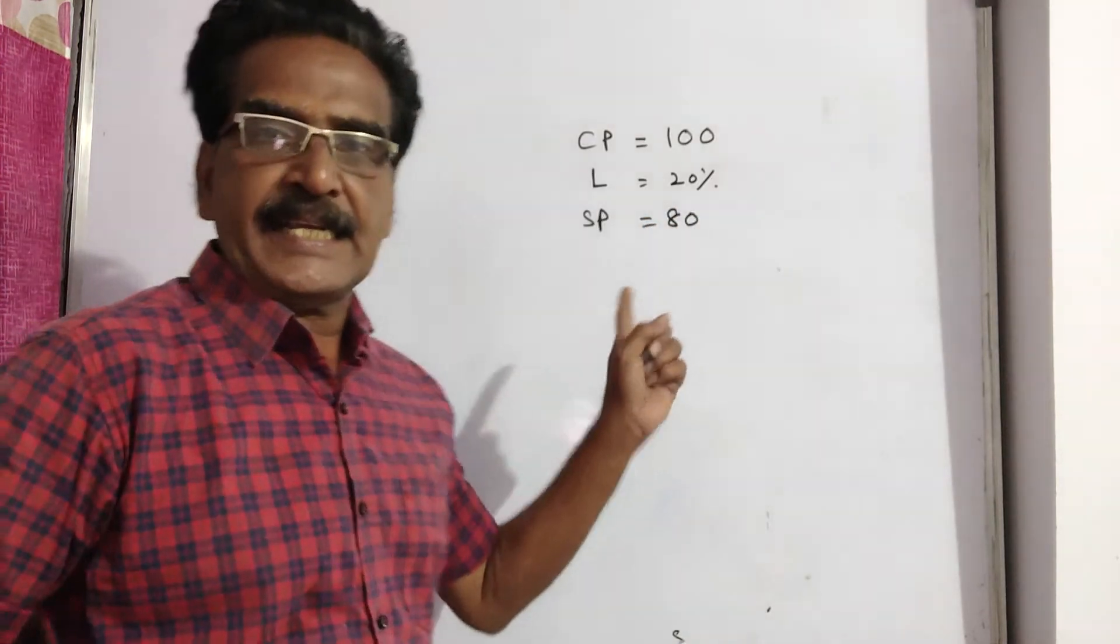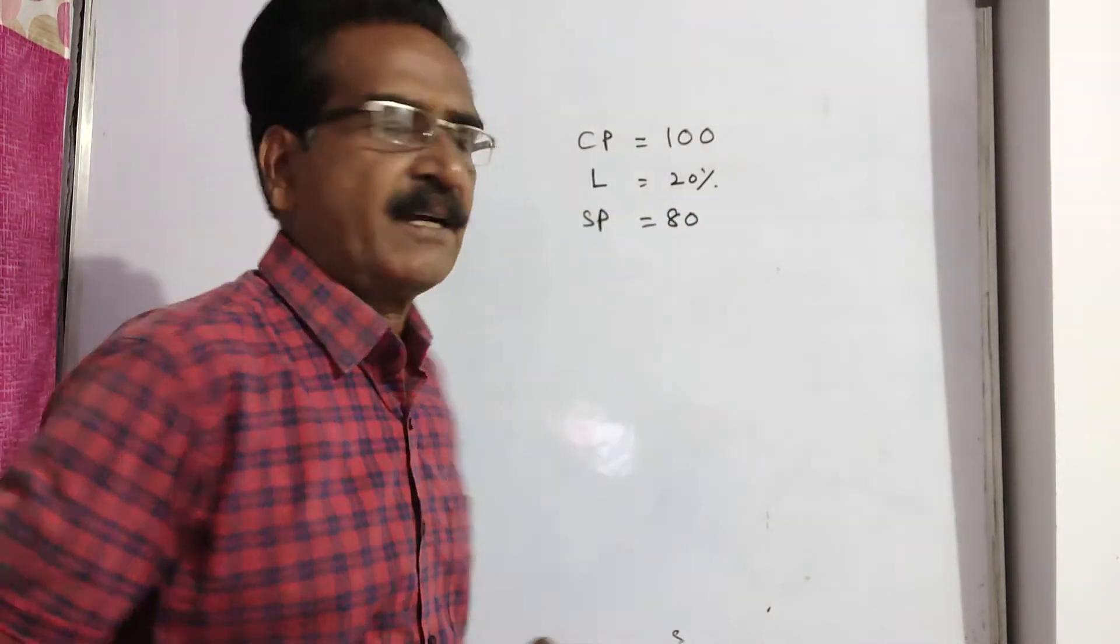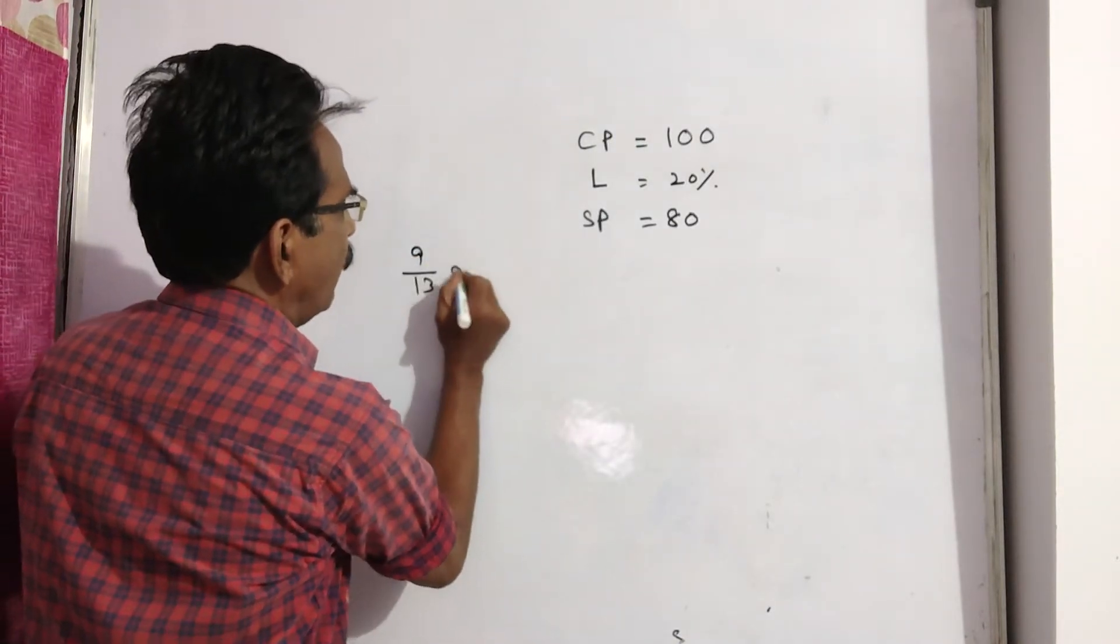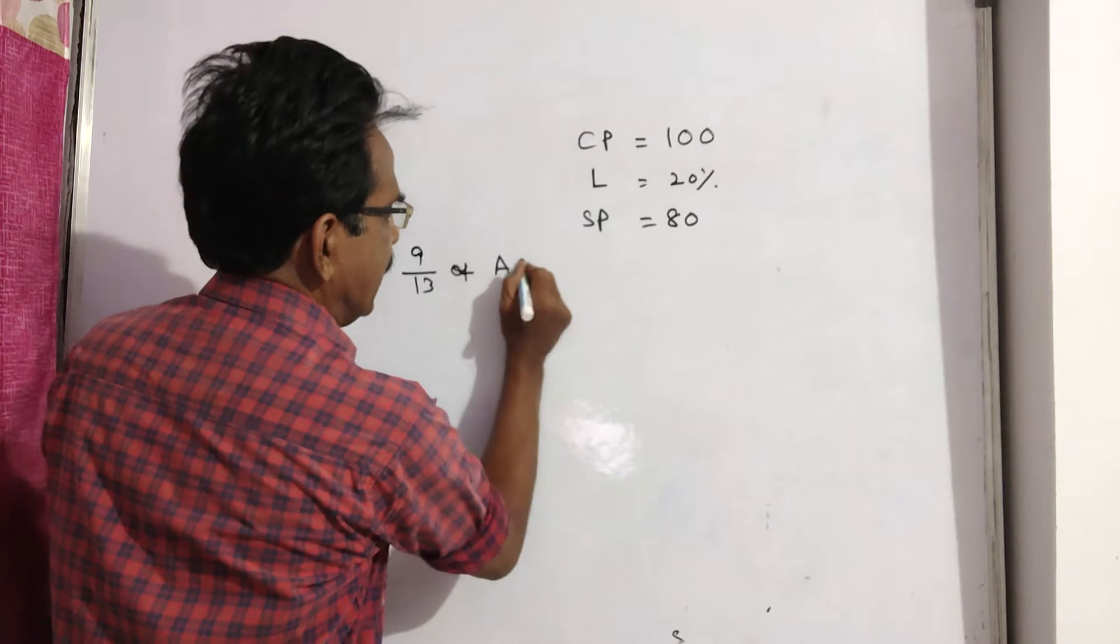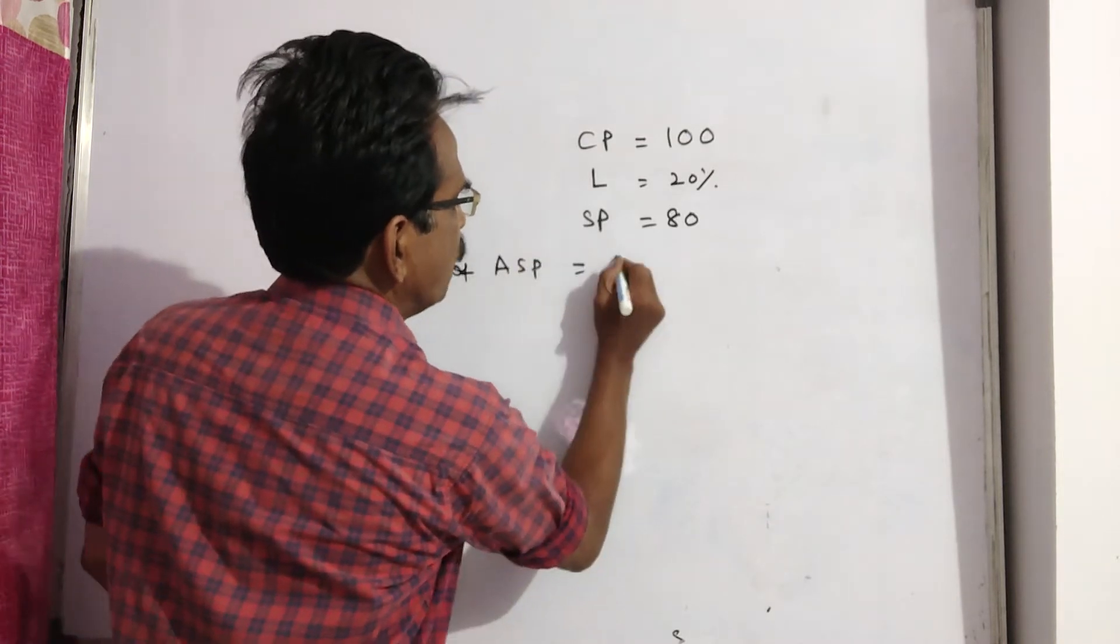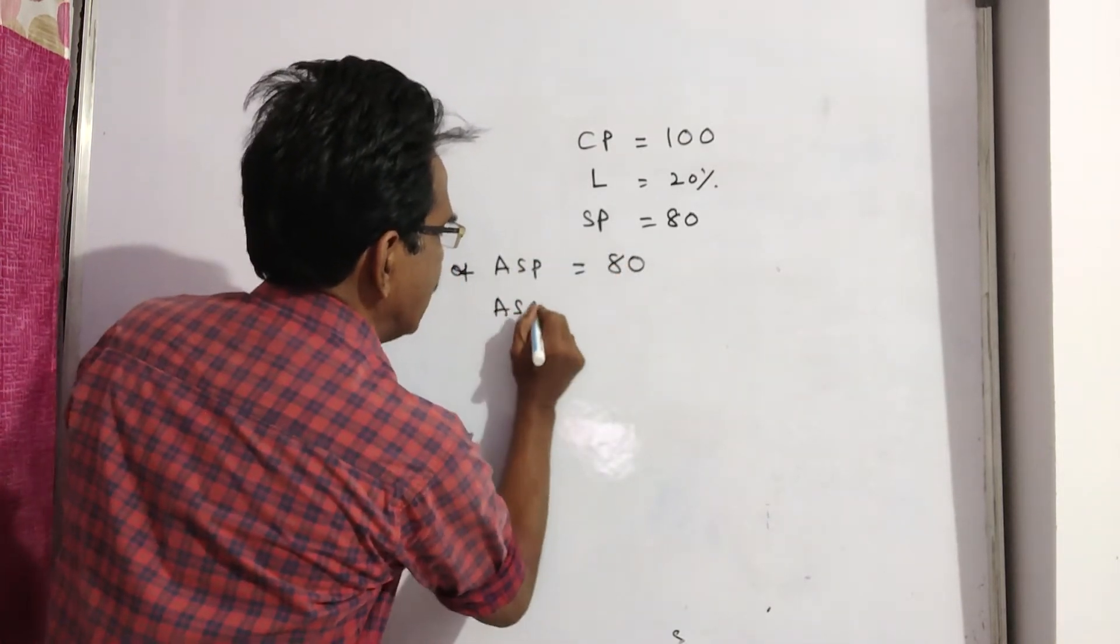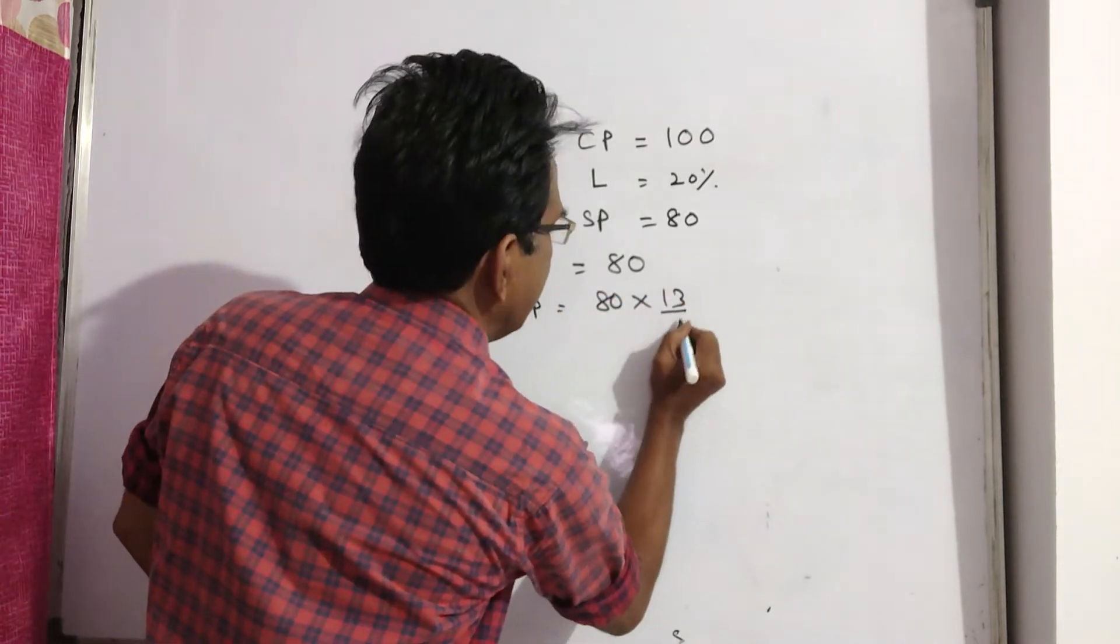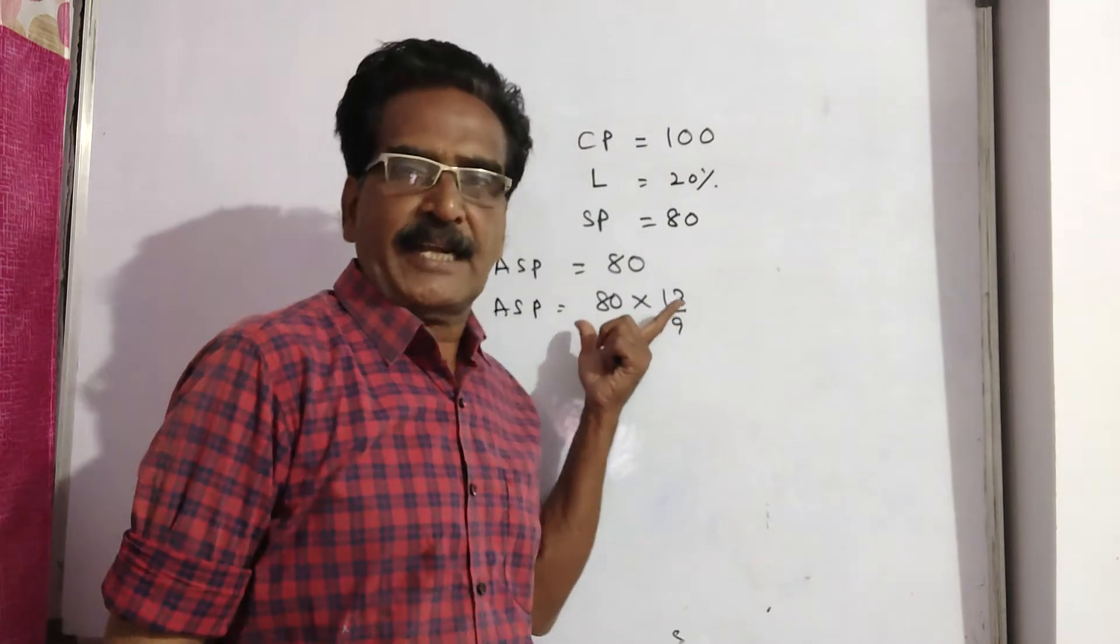This 80 is 9/13 of actual selling price. 9/13 of actual selling price equals 80. Then actual selling price equals 80 times 13/9. This is the actual selling price.